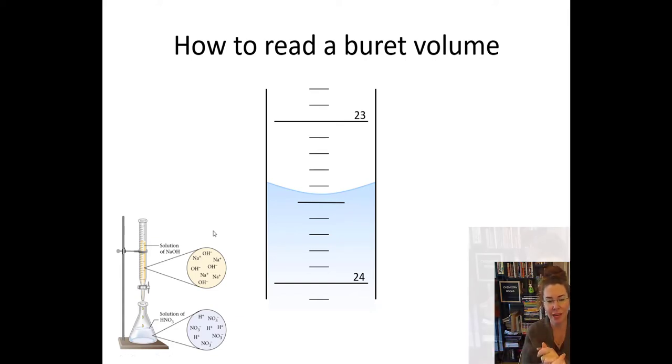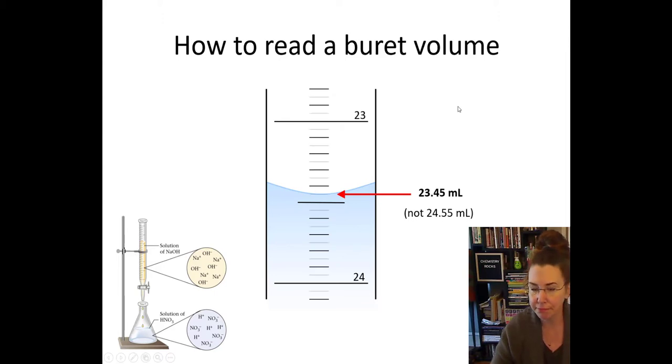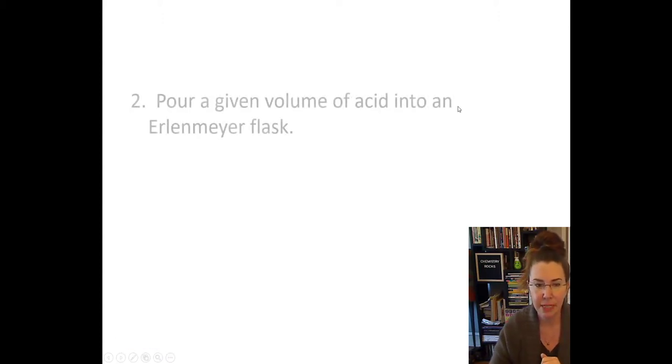Here is a burette. You'll notice smaller number on the top, larger number on the bottom. How much, or let me rephrase that. What is the proper reading on this burette? Alrighty. So if you said 24.55 milliliters, you'd be wrong. Because we don't read from the bottom up. We read from the top down. So this would actually be 23.45 milliliters. See, it's not 24.55. We're not reading from the bottom up. We're reading from the top down.